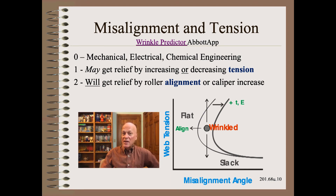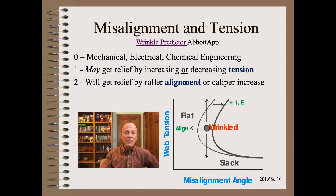This specific in-plane roller misalignment wrinkle subtype has been well studied for more than 25 years. It is so well known that we even have an app to calculate allowable roller misalignment. This is so easy that even a machine operator can use it to help determine whether their machine's design and maintenance is good enough, in that one specific regard, to run thin webs.